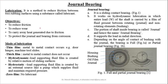First of all we need to understand lubrication. It is a method to reduce friction between two rubbing surfaces using a substance called lubricant. The lubricants might be liquid lubricants, semi-solid lubricants, and solid lubricants. The objectives of lubrication are to reduce friction, to reduce wear, to carry away heat generated due to friction, and to protect the journal and bearing from corrosion.